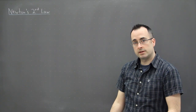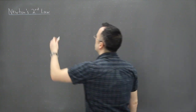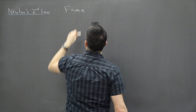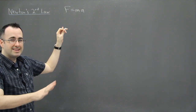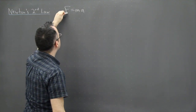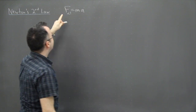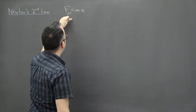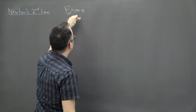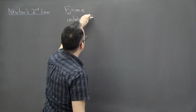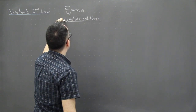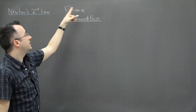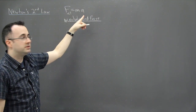Newton's second law is often written as F equals MA. I want to point out a few things about this - this is not entirely true, not always at least. First of all, it's a net force that's equal to MA. In other words, this has to be an unbalanced force. That's the key thing here. That unbalanced force is related to the acceleration of an object.